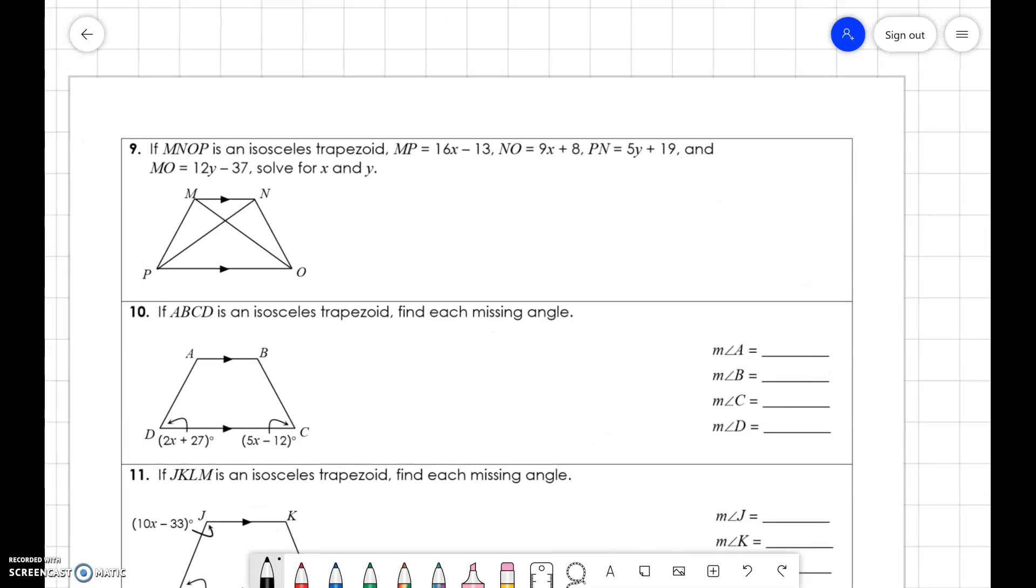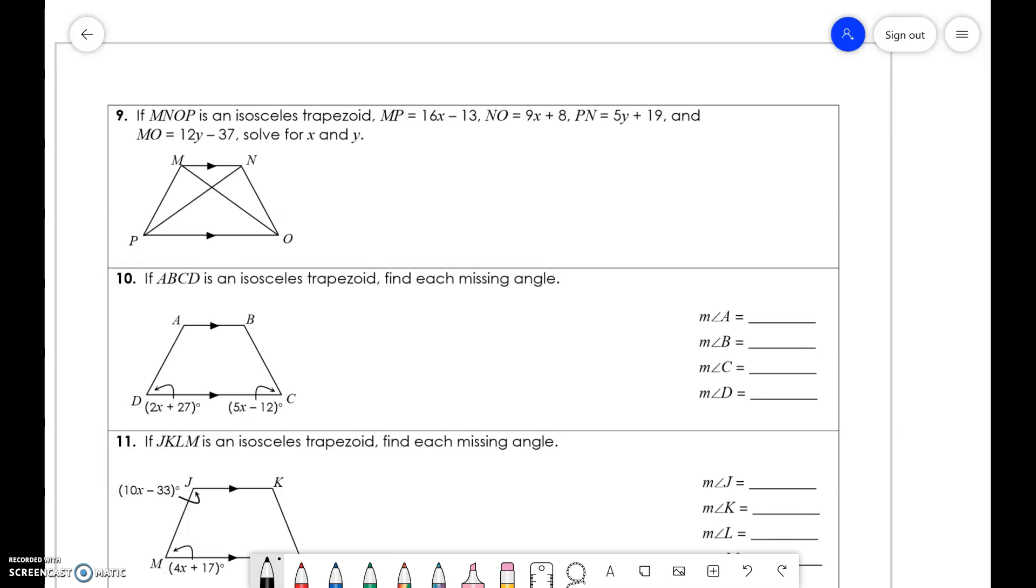Coming over here, I'm going to be jumping around a little bit. We have an isosceles trapezoid. We know MP, NO, PN, and MO. We need to solve for X and Y. We know that MP and NO are the same. So, 16X minus 13 equals 9X plus 8. We get 7X equals 21, X equals 3. Then, we know diagonals, so PN and MO are congruent. So, 5Y plus 19 equals 12Y minus 37. We get 7Y equals 56, so Y equals 8.